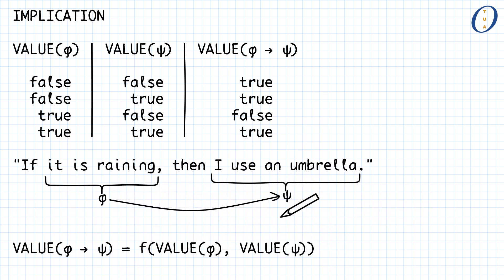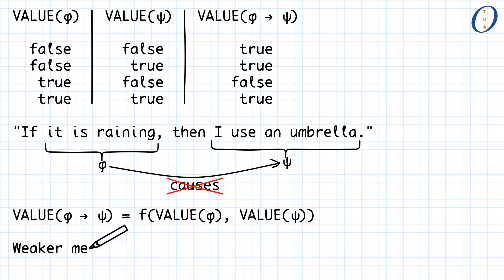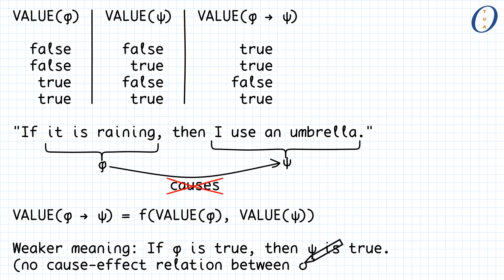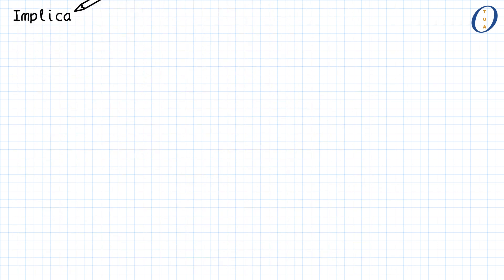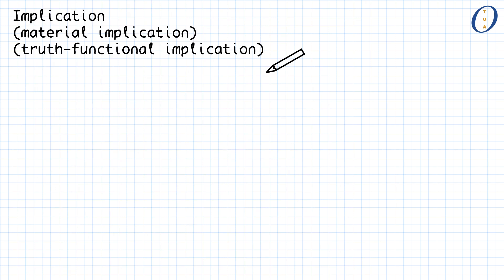This is a bit unfortunate, because English statements such as the one in our example typically convey to the reader some more information. In our example, the fact that it is raining causes me to use an umbrella. But in propositional logic, this cause-effect relation is lost. The meaning of the sentence is weaker — it simply means that if the antecedent is true, then the consequent must be true as well, without necessarily implying a causality relation between them. To emphasize this, some authors refer to implication as material implication or truth-functional implication.